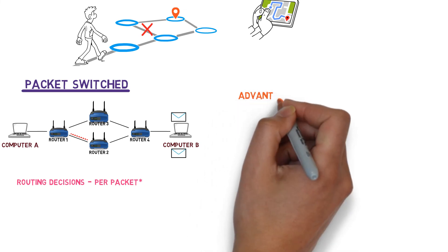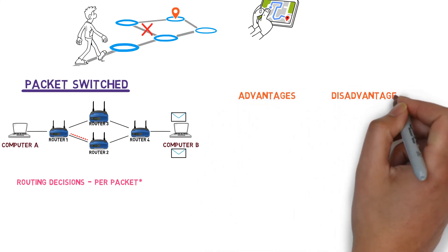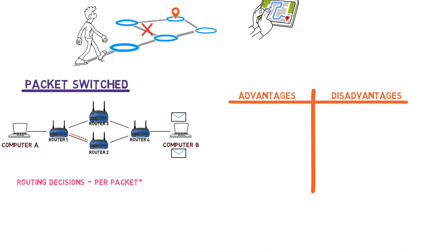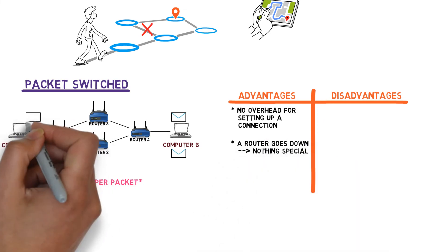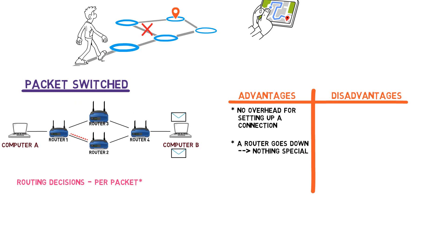What do you think about this implementation? Is it better or worse than the ones we've seen before? There is definitely less overhead — actually no overhead for establishing a connection, since we don't establish a connection at all. If A wants to send a packet to B, A simply sends it with no additional preparation required. Furthermore, if a router goes down, we don't have to establish a new connection. For example, if router 3 is no longer active, when A sends another message to B, router 1 will forward it via router 2 instead of router 3. Since the route is not fixed, the network can easily deal with a single router's failure.